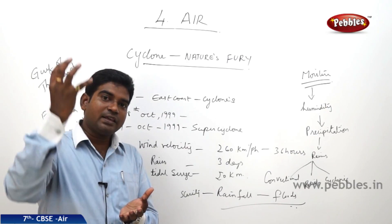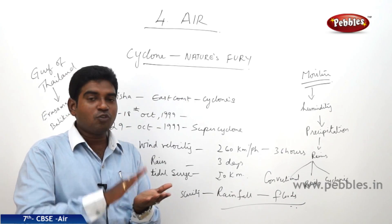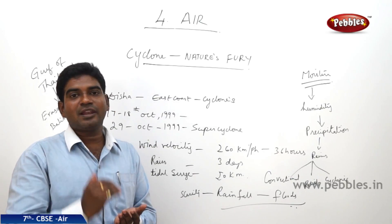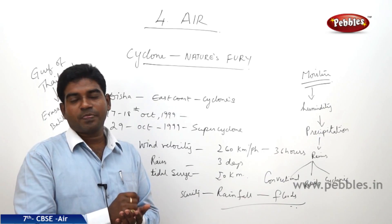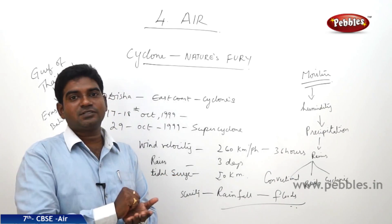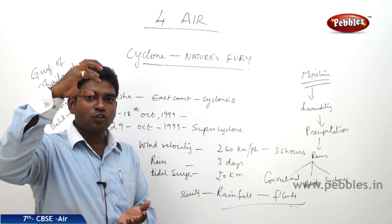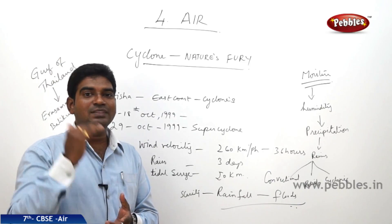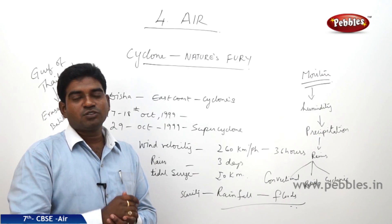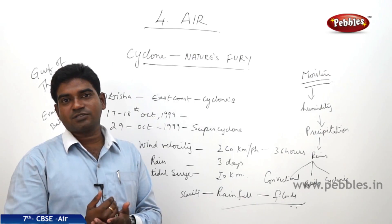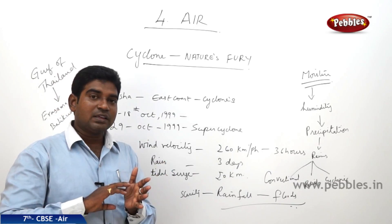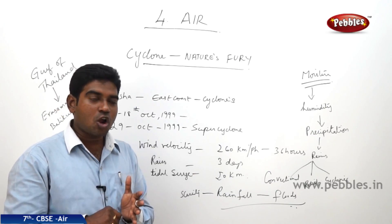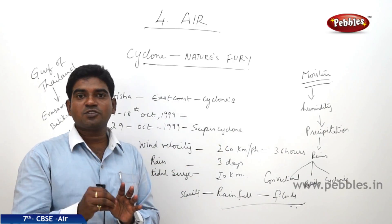When the water vapor reaches the clouds, temperatures reduce. As we move above from the land, the temperatures fall down — for every 165 meters above from the land, 1 degree of temperature falls. As the water vapor goes upwards, temperatures reduce and the clouds hold these small tiny droplets of water. This causes rain. The entire process of water getting heated, evaporating, and getting converted back into droplets and causing rains is called precipitation, which results in the formation of rain.